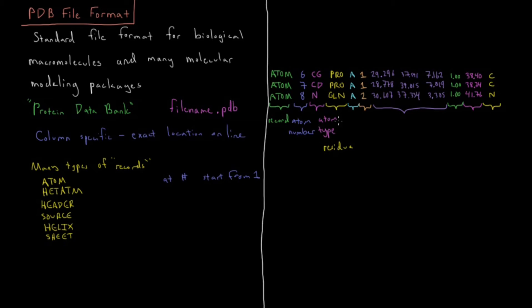Going back to the atom type, the atom type tells us which atom we're talking about within the proline. This is the gamma carbon, the delta carbon, and this is a backbone nitrogen in the glutamine. Those all map to fairly standardized sets of names.